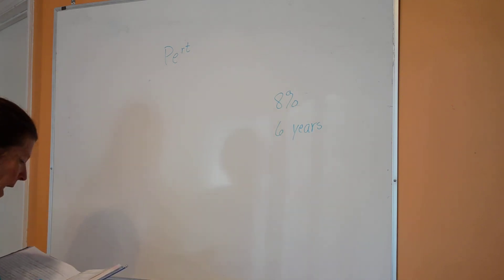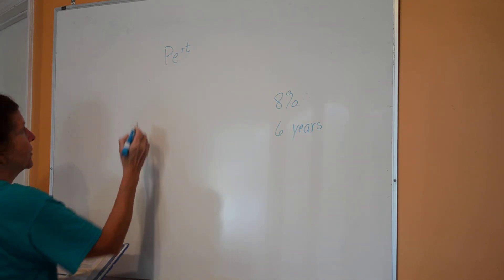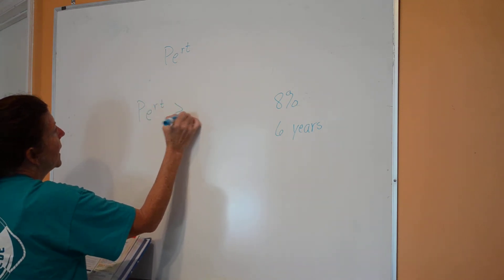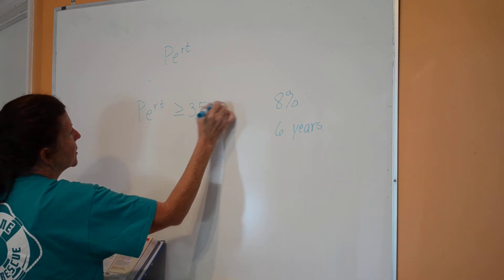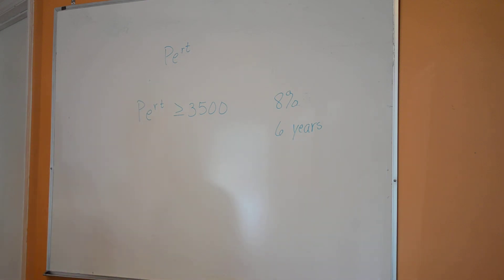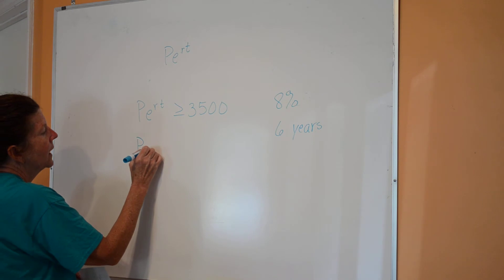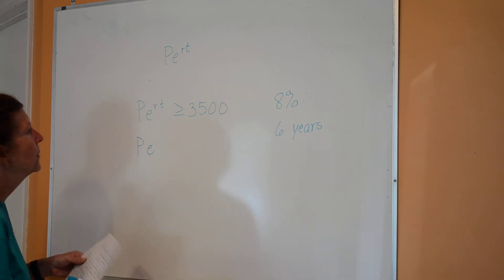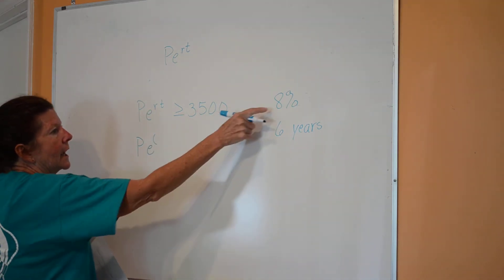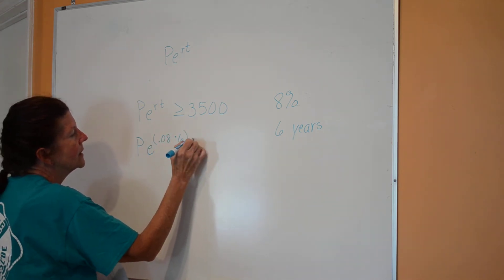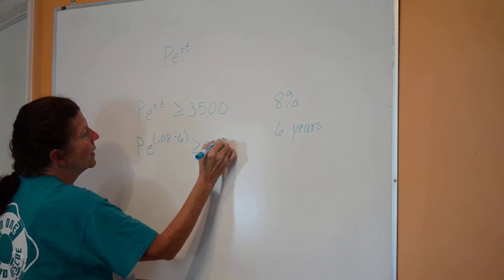They have six years to save $3,500 for the cruise. If the six-year certificate of deposit they buy pays 8%, so it's 8% and it's six years, and it's compounded continuously, so I'm using that formula. How much should they have invested now in order to have at least 3,500 for the cruise? So the PERT is going to have to be greater than or equal to 3,500. They're going to have to make an initial investment, which is your P, but we don't know what that is.